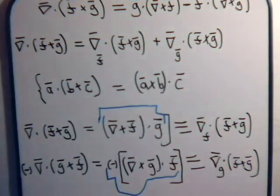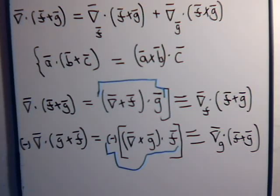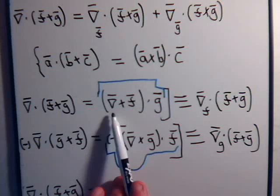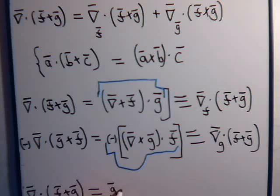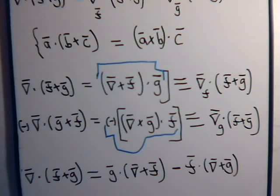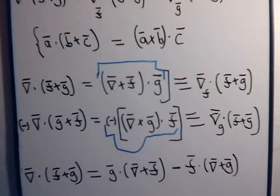Putting it all together, we have that del dot f cross g equals this first term — we're just taking a dot product of two vectors, so you can write it as g dot del cross f — with a minus sign, this second term: f dot del cross g. And there's our vector identity.